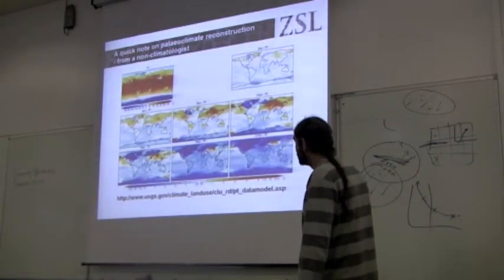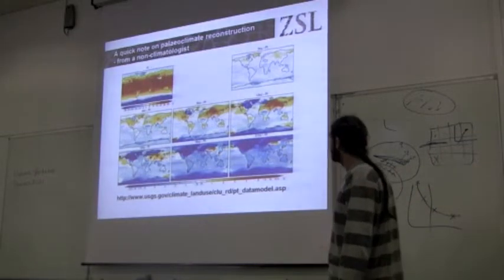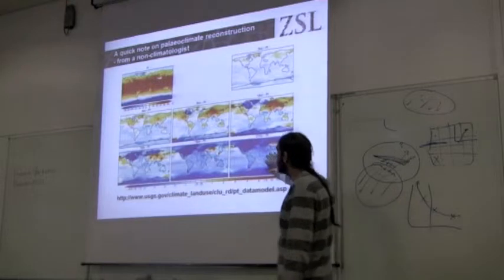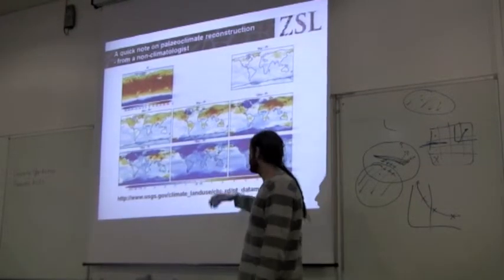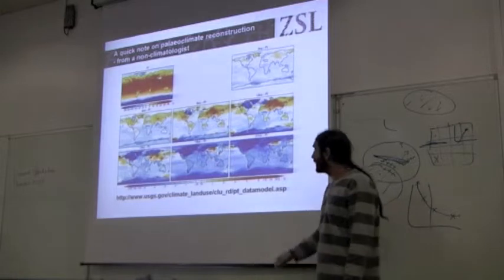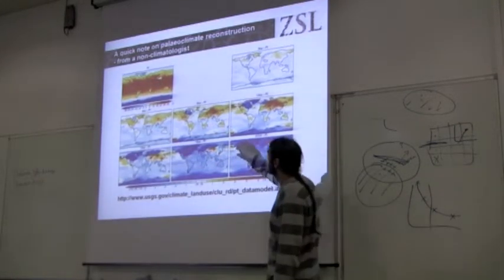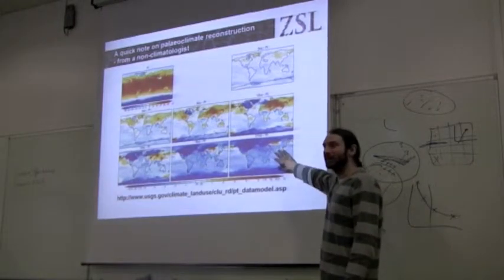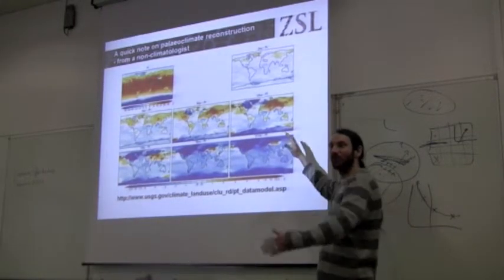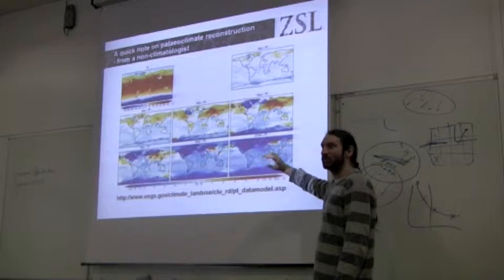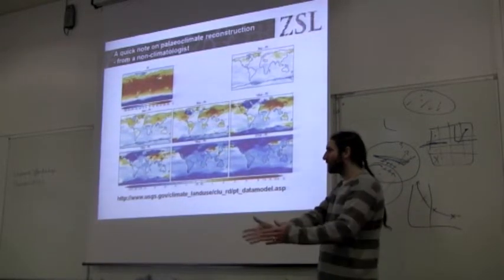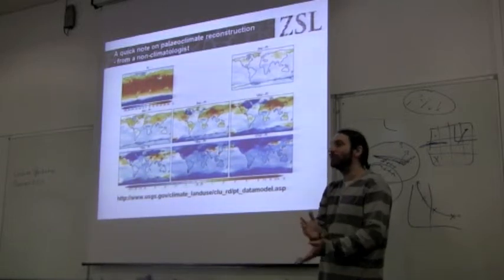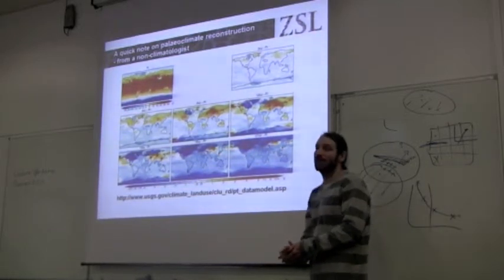One thing you notice is the coarseness of these models compared to, say, WorldClim data. You also see very different looking climate scenarios between different time periods. So in different periods of the past, we've had very, very different climates than we see in the present.